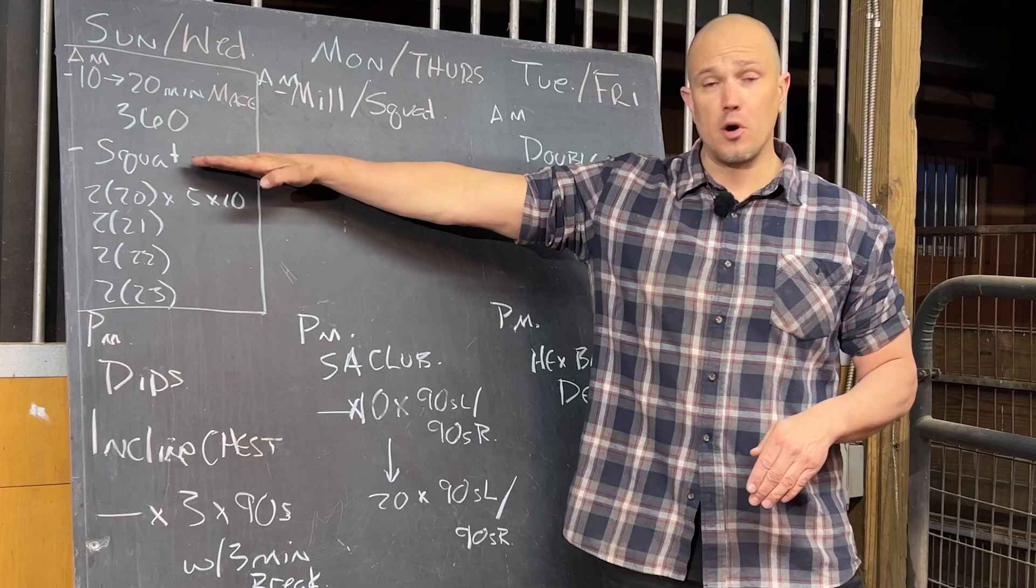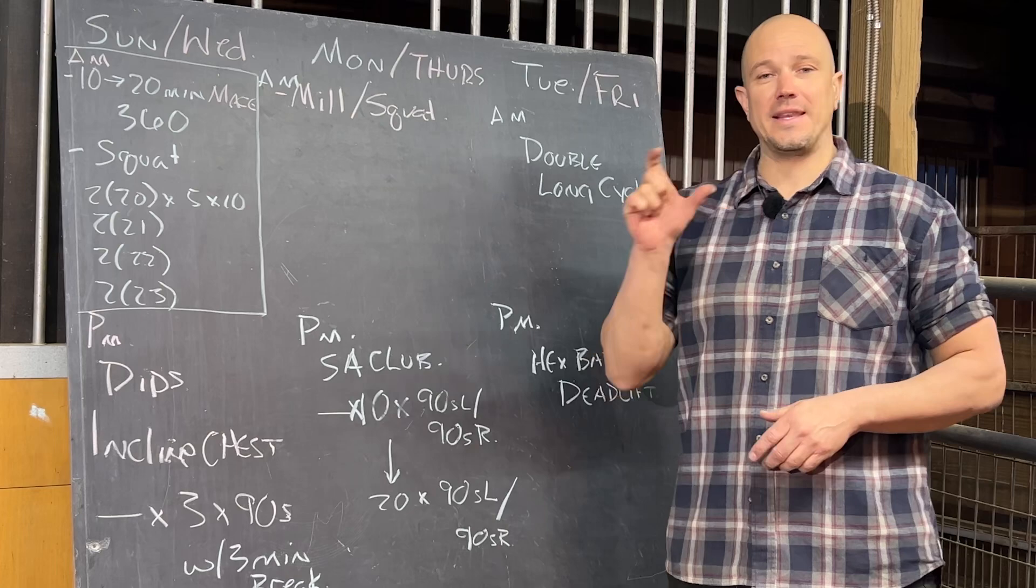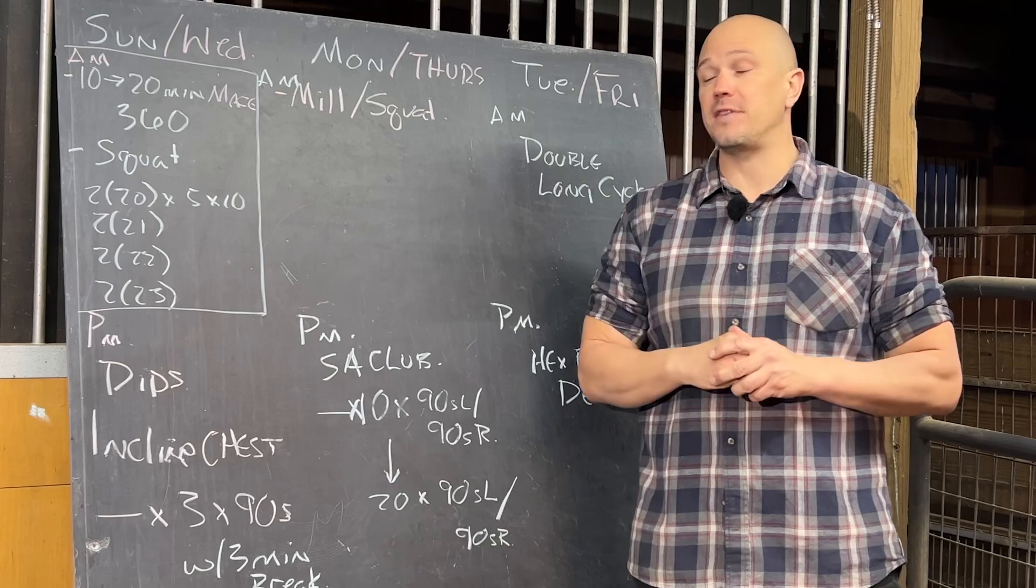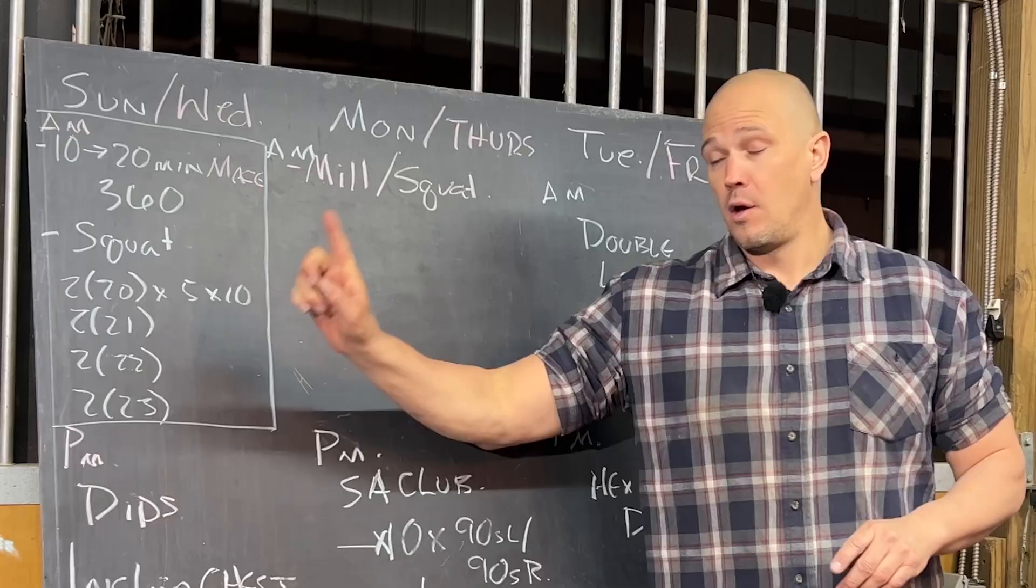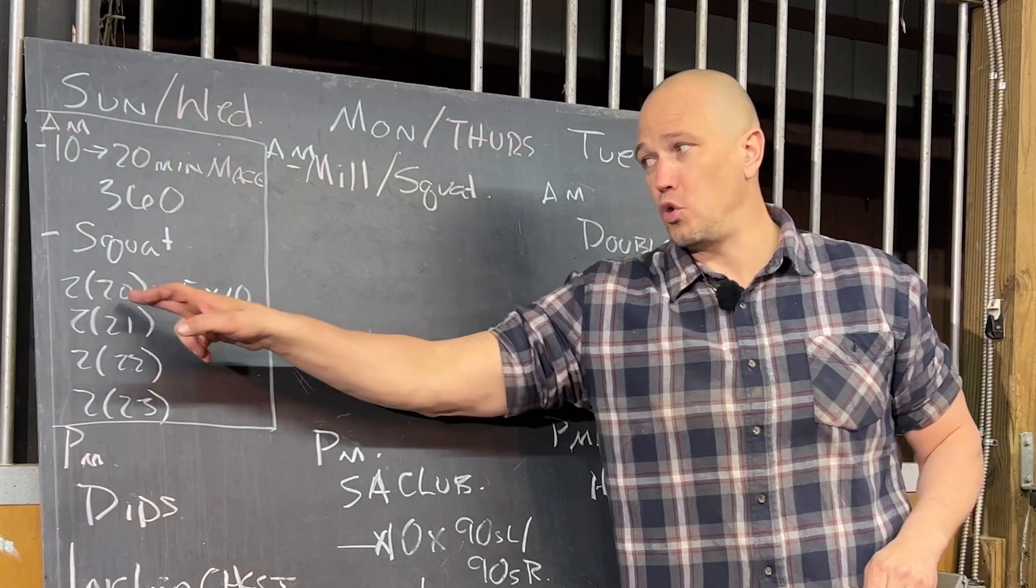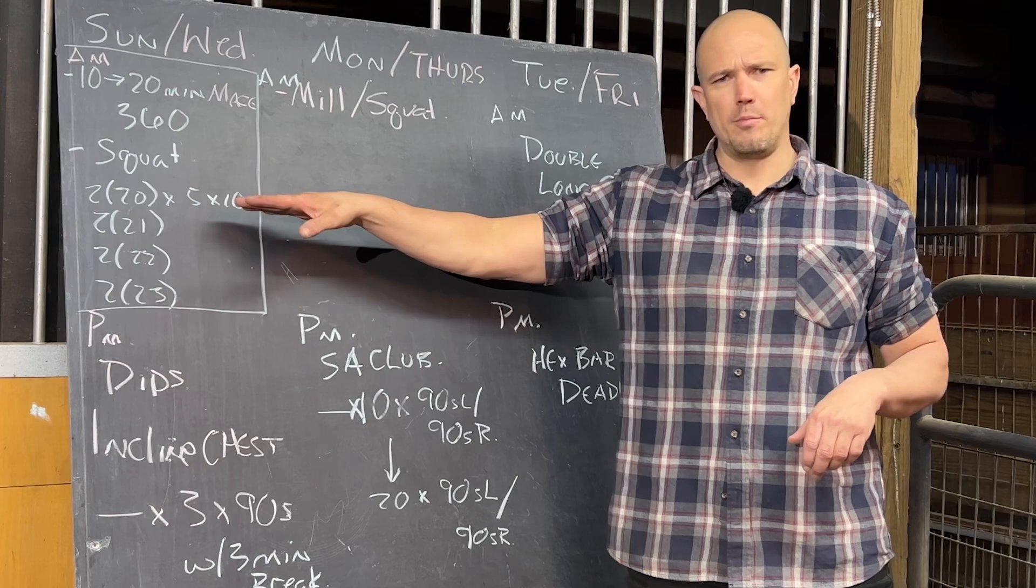The squat program is simple. It is five sets of 10 reps inside of three minutes. Set a three-minute timer. Repeat it five times. That is a 15-minute block of training. Because we have adjustable kettlebells, we will start with 220s. Do double front squats for 10 reps. You should have two-minute plus break.